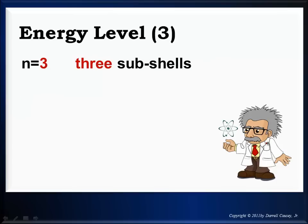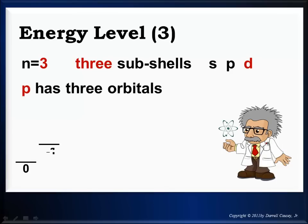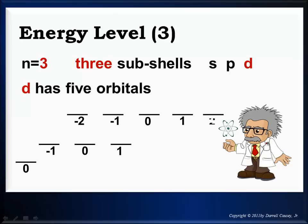Energy level number 3. I'll bet you know there are 3 sub-levels. So that's s, p and d. s has 1 orbital, p has 3 orbitals, and d has 5 orbitals.